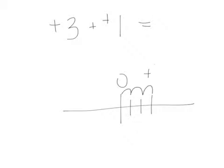Positives to the right. So I'm at positive 3. Plus positive 1. I'm moving 1 to the right. So now I'm at positive 4. 3 plus 1 equals 4. Or positive 4.